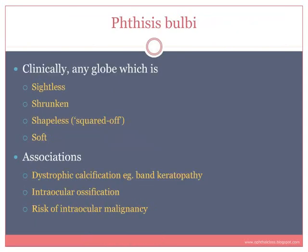Clinically, any soft eye that is sightless, shrunken, and shapeless is called phthisis bulbi. The shapeless or squared-off appearance seen in these soft eyes is usually due to the pressure of the recti muscles on a soft globe. Associations with phthisis bulbi include dystrophic calcification inside the eye or in the cornea — called band keratopathy in the cornea — intraocular ossification, and a remote risk of intraocular malignancy.